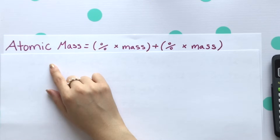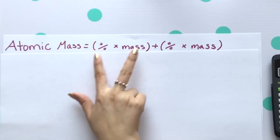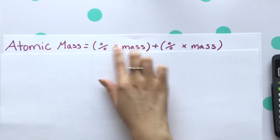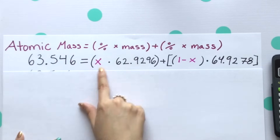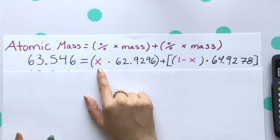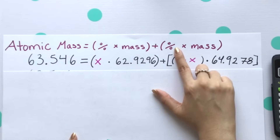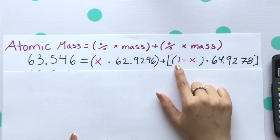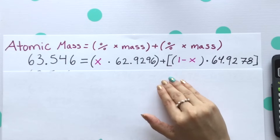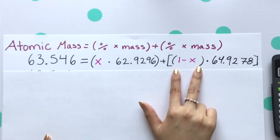Using our percent abundance formula once more, our atomic mass is equal to that percentage. However, we don't know what the percentage is of our first isotope, so we're going to refer to it as X. We place what we do know, which is that atomic mass. Our mass of our first isotope was given, and for the second isotope, we also don't know the percentage, so we'll subtract X from 1. What 1 refers to is 100% — so if we don't know what X is, we subtract it from 1, and that gives us our second percentage. We'll multiply this by the mass of our second isotope.